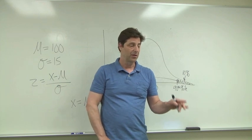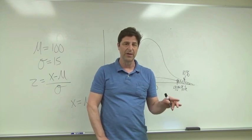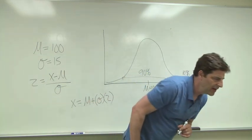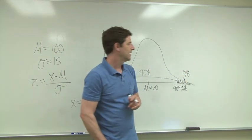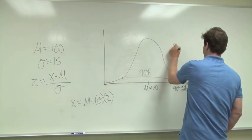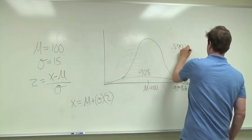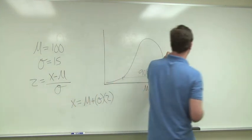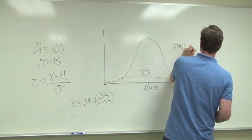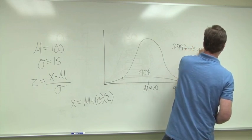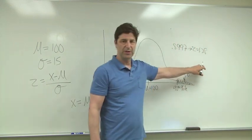Okay, so in appendix A, the closest that we can get to a value of 0.90 is 0.8997. And that's associated with a Z-score of 1.28.